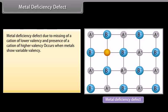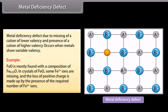Metal deficiency defect. Metal deficiency defect due to missing of a cation of lower valency and presence of a cation of higher valency occurs when metals show variable valency. Example: FeO is mostly found with a composition of Fe 0.95 O. In crystals of FeO, some Fe2+ ions are missing and the loss of positive charge is made up by the presence of the required number of Fe3+ ions.